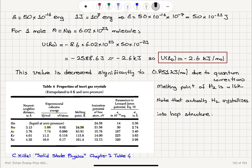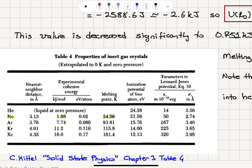Looking at the properties of inert gases here, the experimental cohesive energy for neon is 1.88 kJ/mol and melting point is 24.56 K.